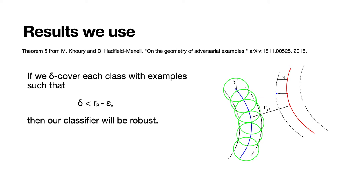There have been proposals for robust defenses, like the theorem that we are using. If we cover our classes with sufficiently fine sampling, we can avoid those examples. How fine that sampling needs to be is the question we want to answer here.